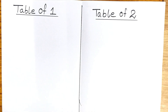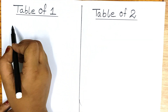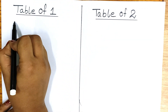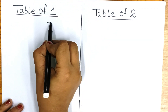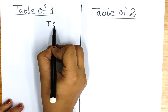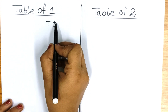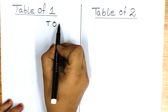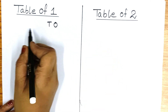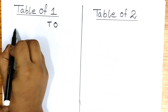Hello everyone, welcome to my class. I am here with my new topic, that is tables. So let's start writing. First, write T.O. over here. T stands for Tens and O stands for Ones. Okay, I hope this is clear. Let's start writing.